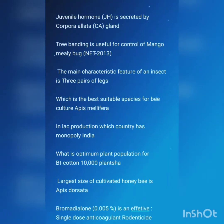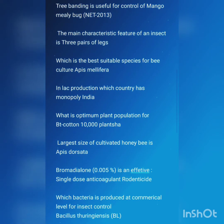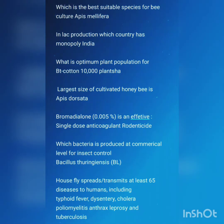Tree banding is useful for control of mango mealybug — this question came in NET 2013. The main characteristic feature of an insect is its three pairs of legs. The best suitable species for bee culture is Apis mellifera. In lac production, India has monopoly. The optimum plant population for Bt cotton is 10,000 plants per hectare.